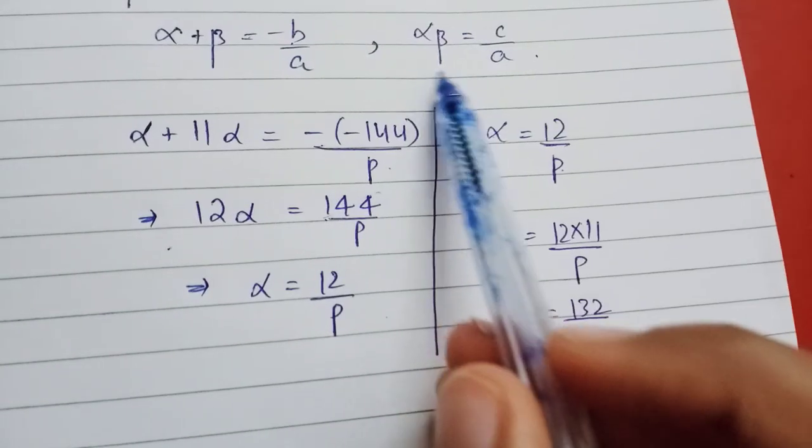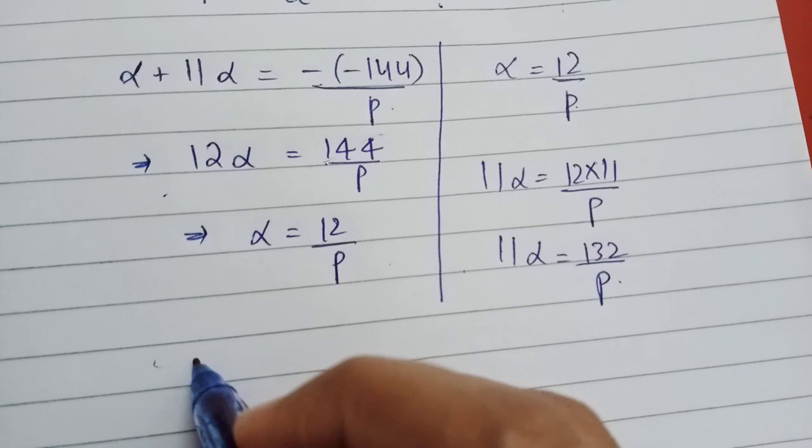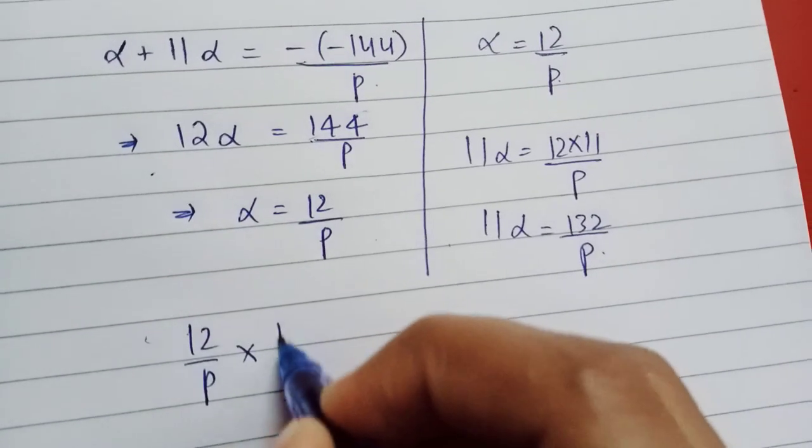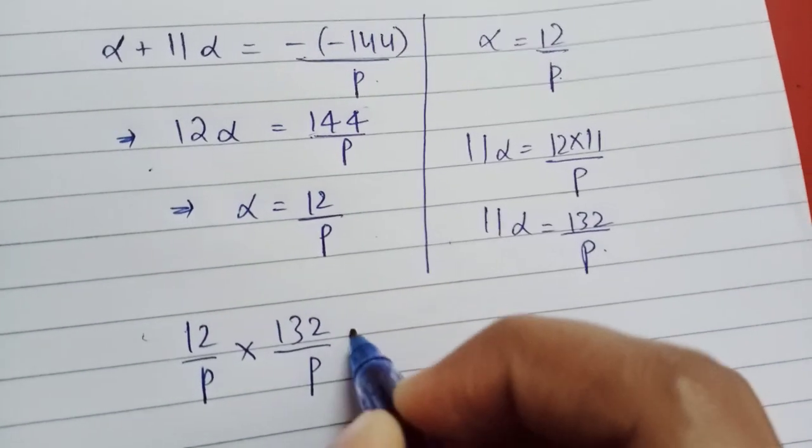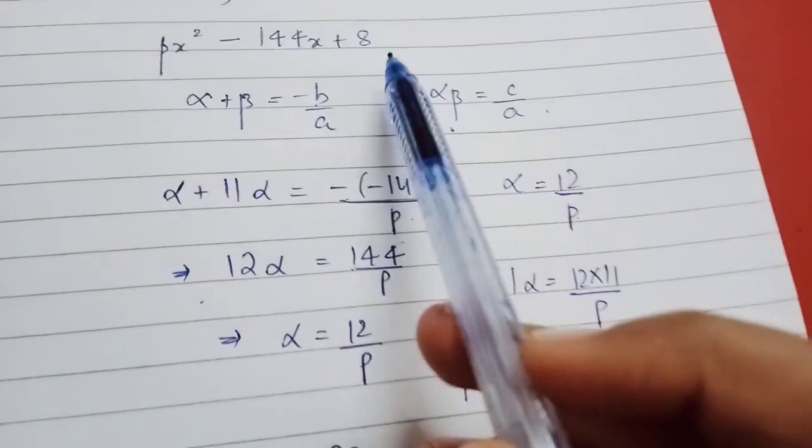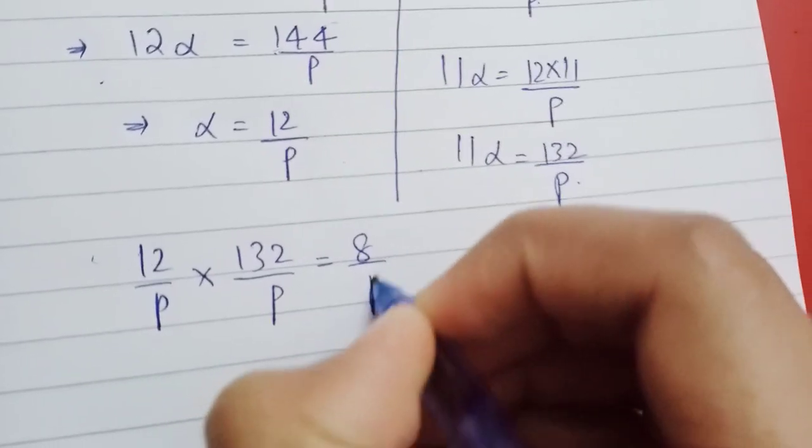Now α times β = c/a. Substituting, (12/p) times (132/p) = 8/p, where c = 8 and a = p.